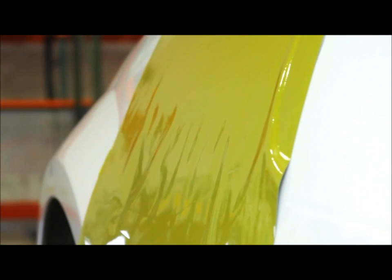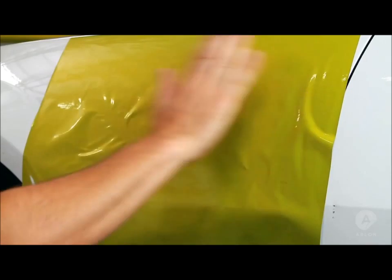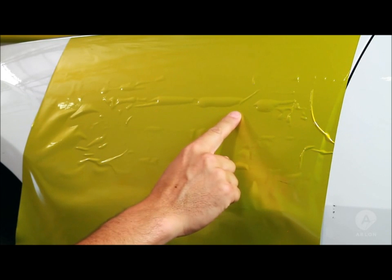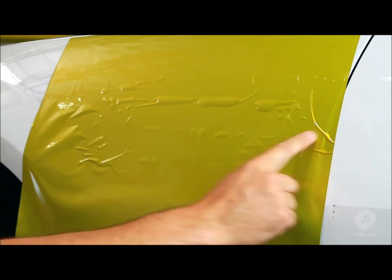Sometimes the vinyl touches the vehicle before your squeegee places it there, which results in bubbles. Here we have a really long bubble, and here we have something that could turn into a wrinkle, and here as well.